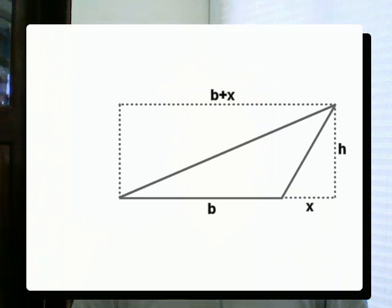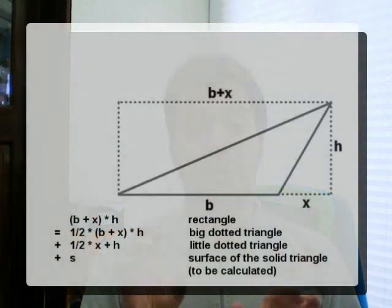So, that side is half times h times the base plus the width of the overhang, which I will call x. So that's half times h times b plus x.